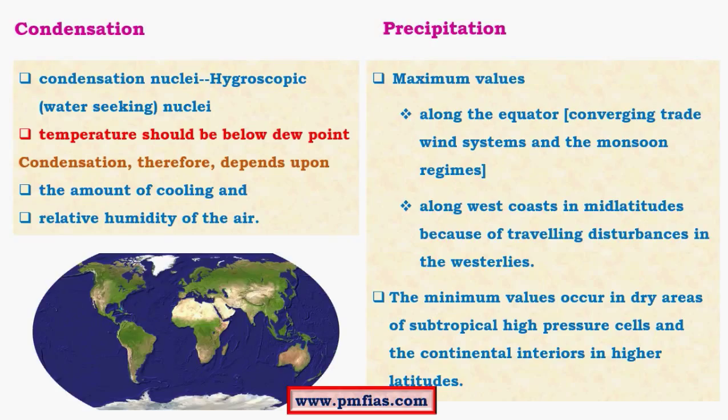For condensation to occur, temperature should be below the dew point. When temperature falls below dew point, saturation is transferred into condensation. Condensation also depends on the amount of cooling and relative humidity of the air. Precipitation is essentially condensation beyond the dew point.